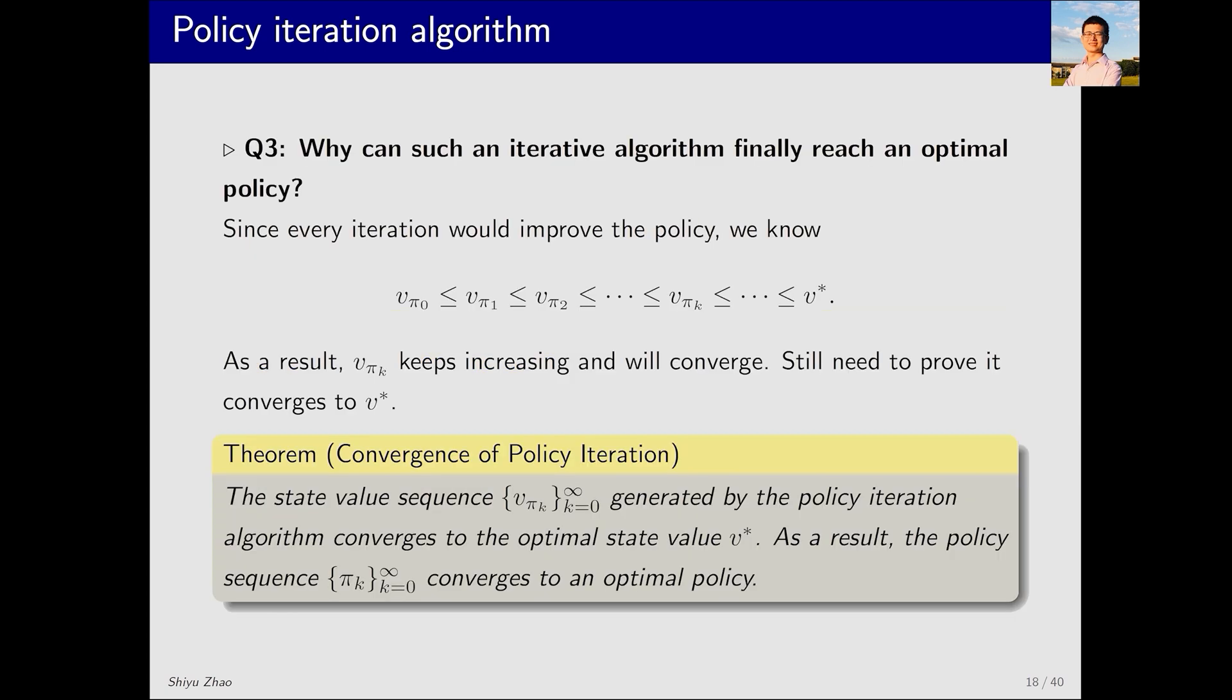The third question is why such an iterative algorithm can finally reach an optimal policy. First, we know there's a step called policy improvement, so the policy is constantly improving. Initially, vπ0 might not be good, but as we improve, vπ1 gets better and then vπ2 is even better. Gradually, vπk will be better than the previous ones. The best value, v star, is the solution to the Bellman optimality equation and hence the optimal state value. Intuitively, it seems that vπk will reach the optimal value, but mathematically, it's not that simple. Although we know vπk is improving, whether it can reach the optimal value still needs proof. In fact, vπk will indeed converge to the optimal state value as k approaches infinity, and the policy will also converge to an optimal policy. For a detailed proof, you can refer to my book.